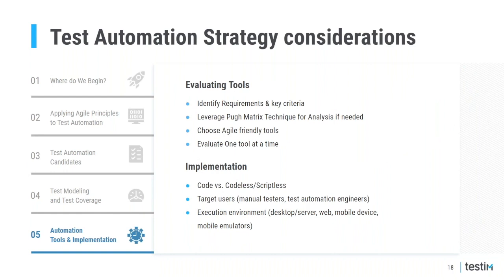Tool selection involves understanding your requirements and decision-making criteria. If you already have a test automation tool in-house, consider that as a baseline. You may leverage a pool matrix technique for analysis. If you're an agile development shop, pick an agile-friendly tool — for example, one that ties test cases and test results back to user stories in your agile management tool. For implementation, you have the option to go code-based or codeless. Test engineers prefer code-based or hybrid solutions while manual testers prefer codeless. Your choice also depends on your test execution environment.